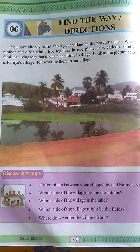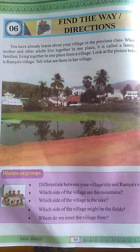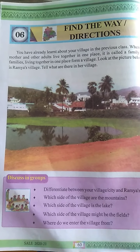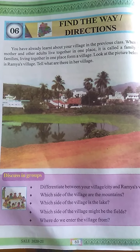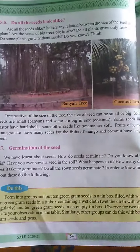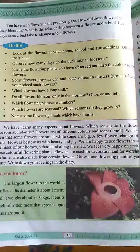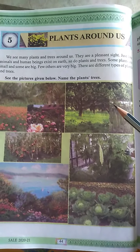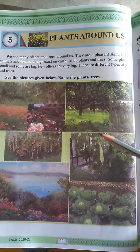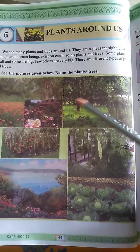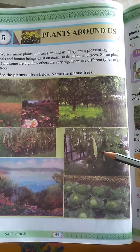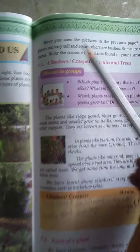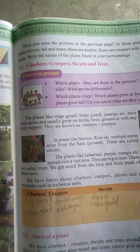In the previous class, what we learned - just we will revise once. We learned about the different types of plants. What are the different types of plants? There are many different types of plants around us. Some are trees, some are plants, climbers, creepers. These are the different types of plants we learned. What are the different types of plants? Climbers, creepers, shrubs and trees.